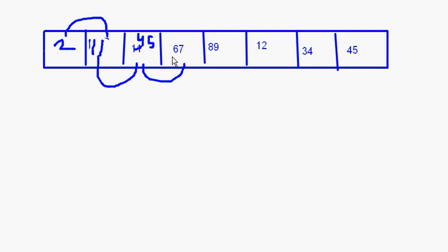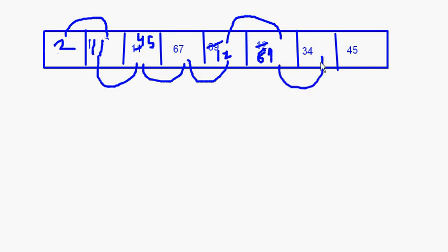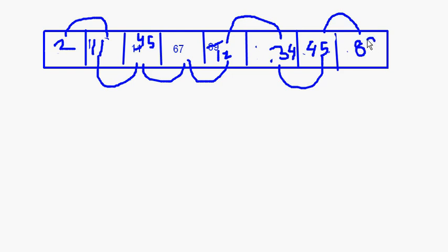Now compare 45 and 67 — no change because 45 is less than 67. Then 67 and 89 — no change because 67 is less than 89. Then 89 and 12: 12 comes here and 89 goes there. After that 89 and 34: 34 is less than 89, so 34 comes here and 89 goes there. Then 89 and 45: 45 is less, so this becomes 45 and this becomes 89.